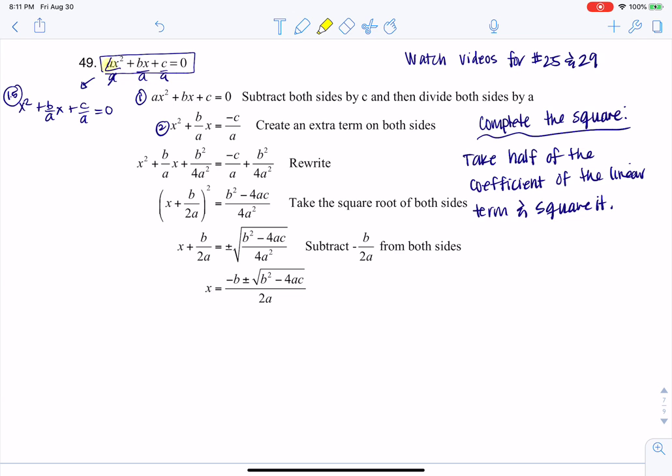So I will get x squared. I'm going to have b over a times x here. And then I'm going to have c over a equaling zero. So you can kind of think of that as step 1.5. Because in order to complete the square, you need to make sure that your lead coefficient in front of your quadratic term is 1. And right now, since there's no number in front of the x squared, we would assume it was 1.